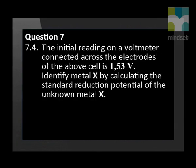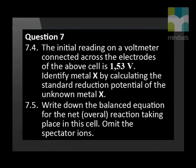The initial reading on a voltmeter connected across the electrodes of the above cell is 1.53 volts. Identify metal X by calculating the standard reduction potential of the unknown metal X. Write down the balanced equation for the net reaction — that is, the overall reaction — that takes place in this cell. Leave the spectator ions out.